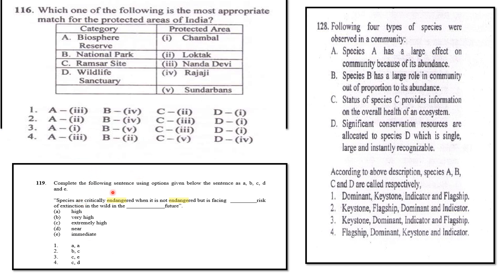Second question: Complete the following sentence - 'Species are critically endangered when it is not endangered but is facing dash risk of extinction in the wild in the dash future.' Try to solve this. Definitions mein aapko pata tha - definitions yaad karni hain. The answer is C - critically endangered aur endangered mein difference poochha hai - the answer relates to extremely high risk in the immediate future.